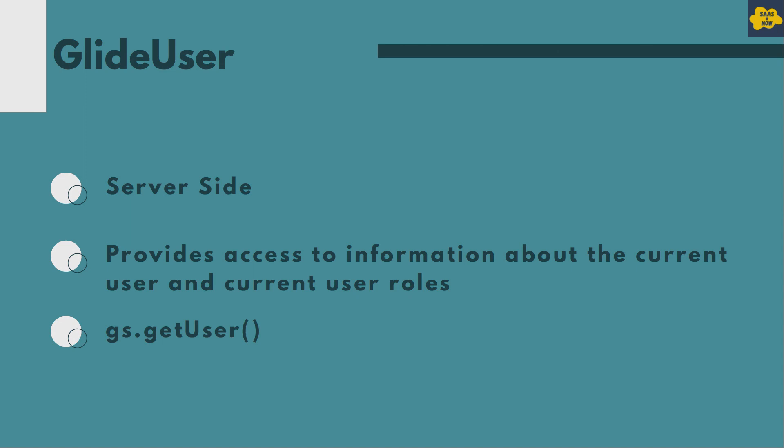GlideUser API and its methods minimize the use of GlideRecord queries on the sys_user table to access information about the logged-in user. GlideUser is used with the GlideSystem API, which is used to access information about the system. To access system information you use GS and then any method, and to access the logged-in user's information you use gs.getUser(), which gives you the reference to the user object for the current logged-in user. GlideUser API also provides methods to access information like first name, roles, etc.